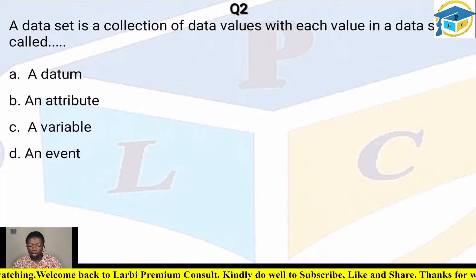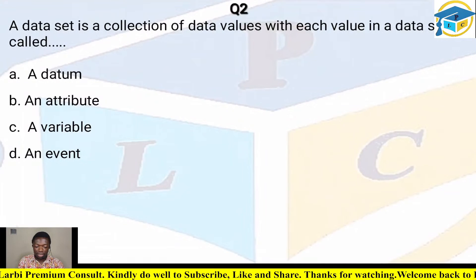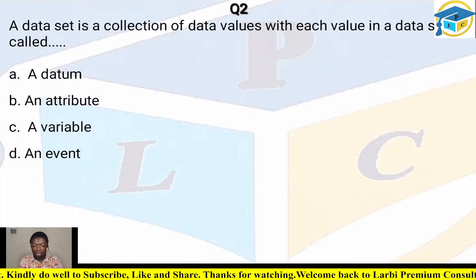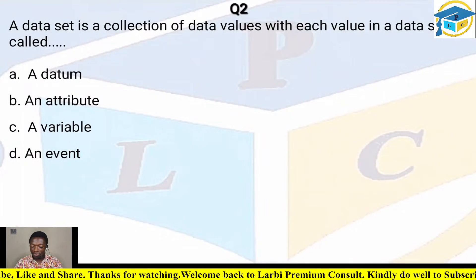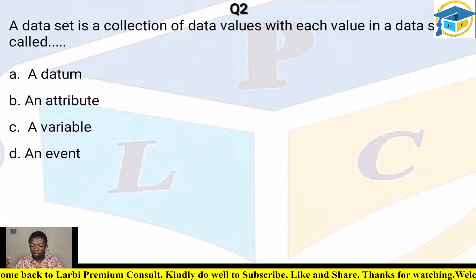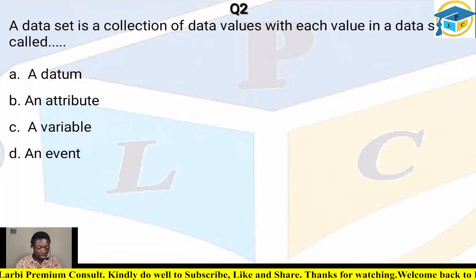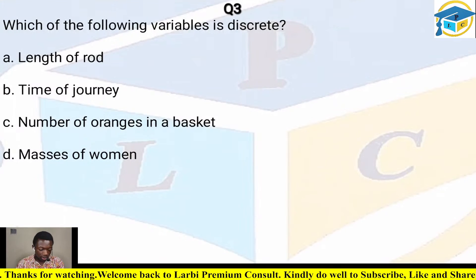Question two: a data set is a collection of data values, with each value in a data set called what? Options: A) datum, B) attribute, C) variable, D) event. The correct answer is A — datum — because a datum is each individual value within the data set.